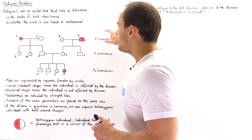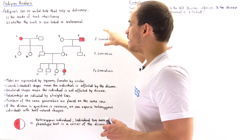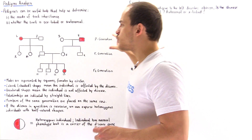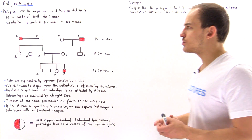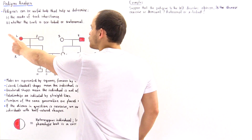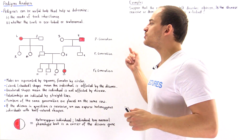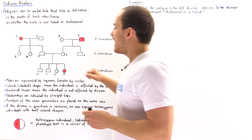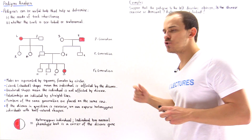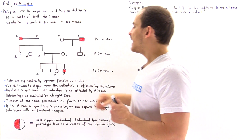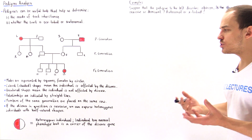All individuals found along the same row belong to the same generation. For example, individuals 1, 2, 3, and 4 belong to the P generation. Individuals 5, 6, 7, 8, and 9 belong to the F1 generation. And individuals 10, 11, 12, and 13 belong to the F2 generation.